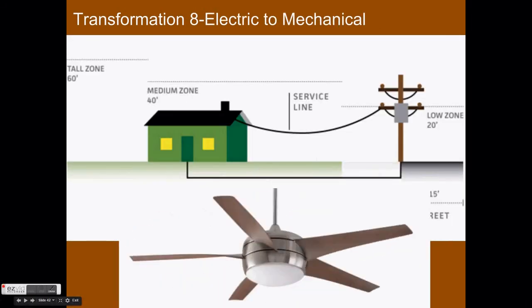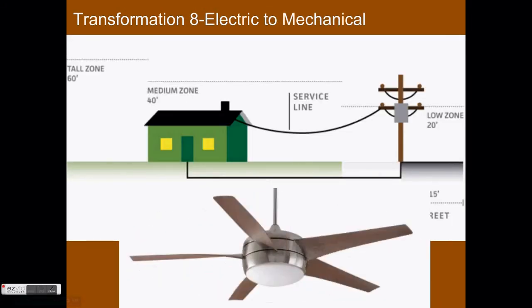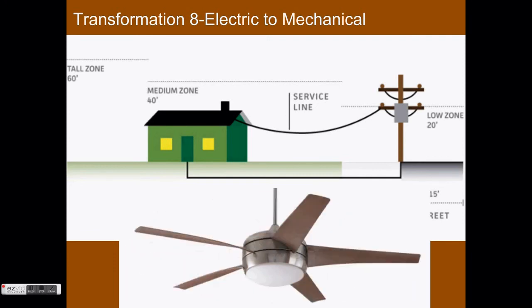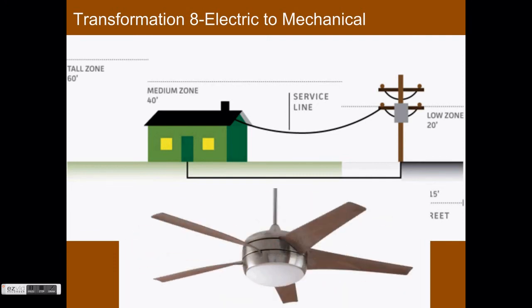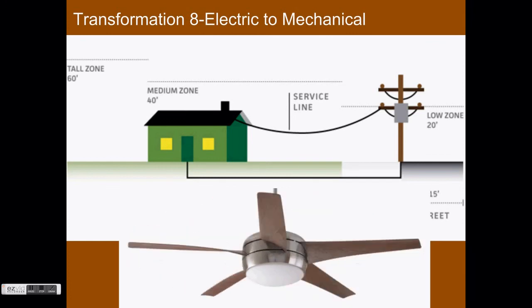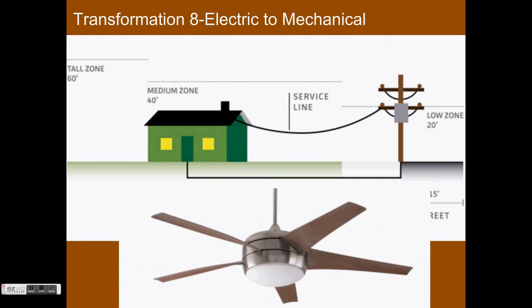Finally, in the last transformation, electric energy travels through power lines until it reaches a building. The electric energy transforms into mechanical energy as it powers a motor and a fan. So there you have it — that's how we power our appliances using electricity.